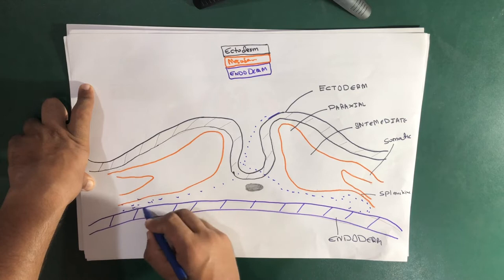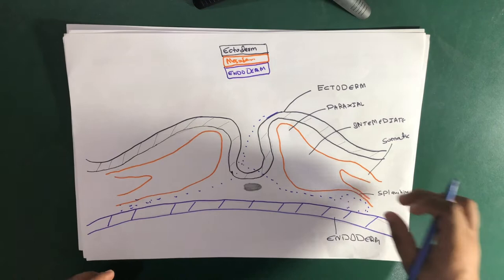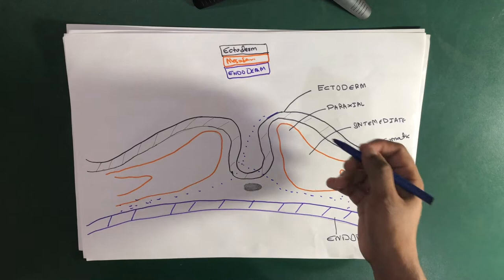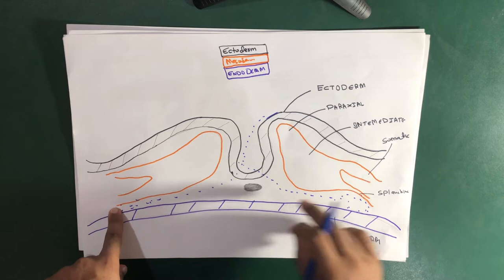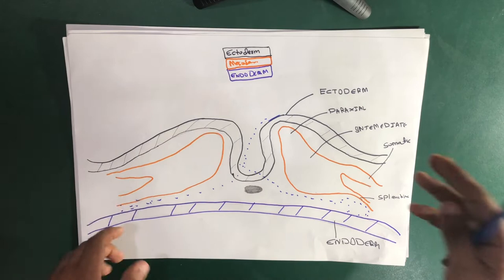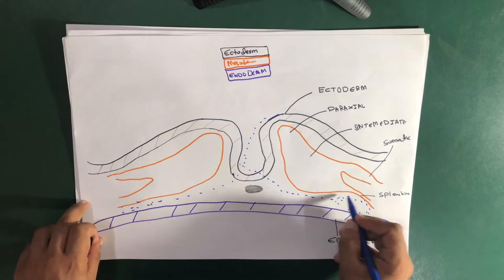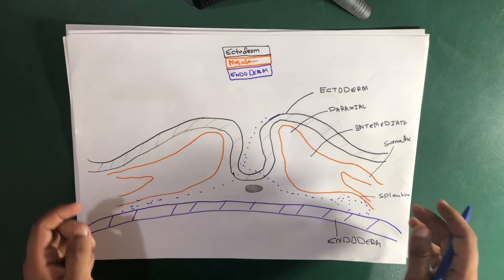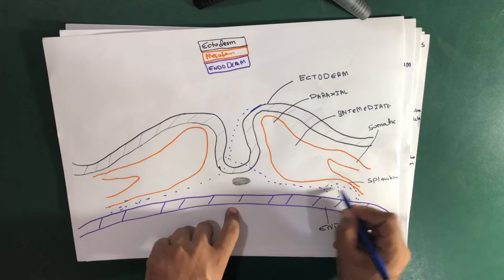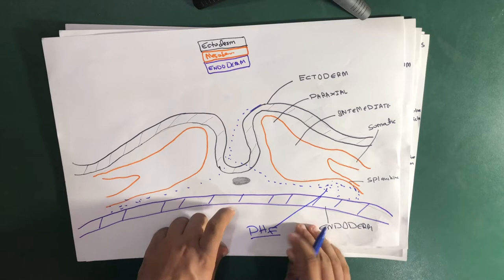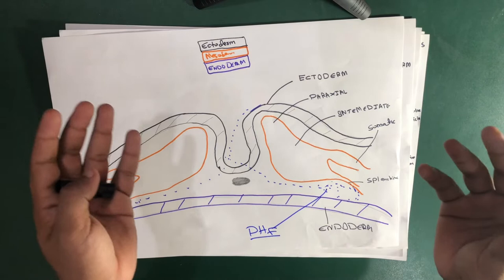Below the splanchnic layer, or near the splanchnic area, the progenitor heart cells which arise from the ectoderm migrate to the splanchnic layer of the lateral plate mesoderm and form a horseshoe shape, which is called the primary heart field (PHF). The primary heart field is near the splanchnic area, and there is also a secondary heart field from which different structures arise.